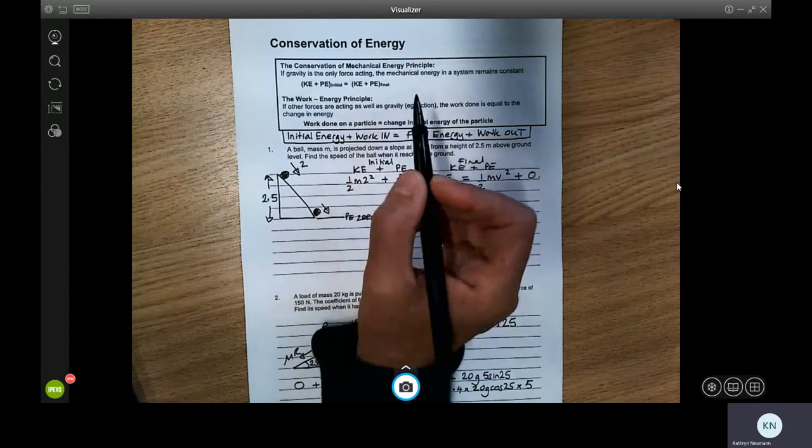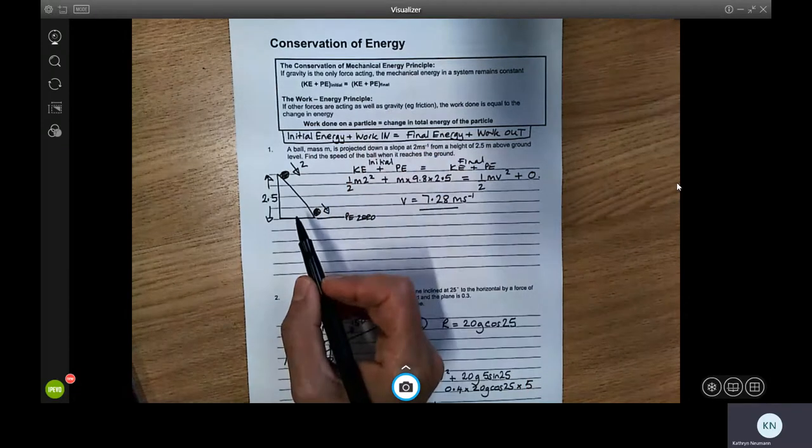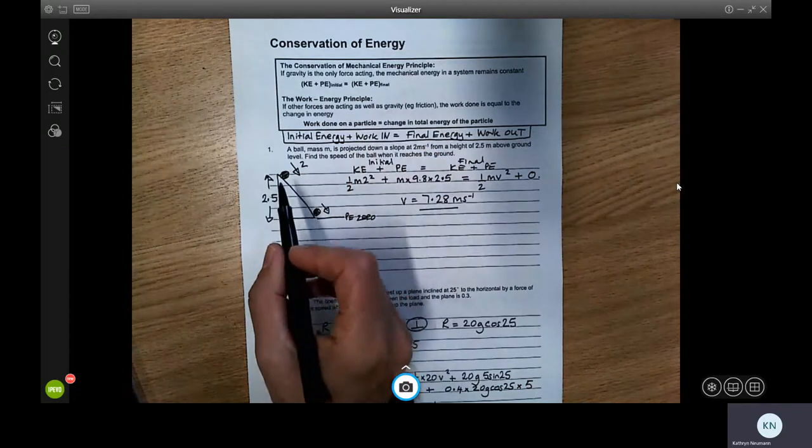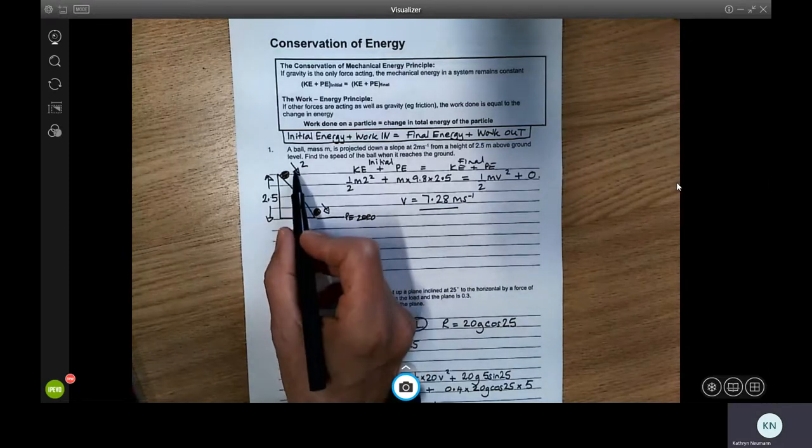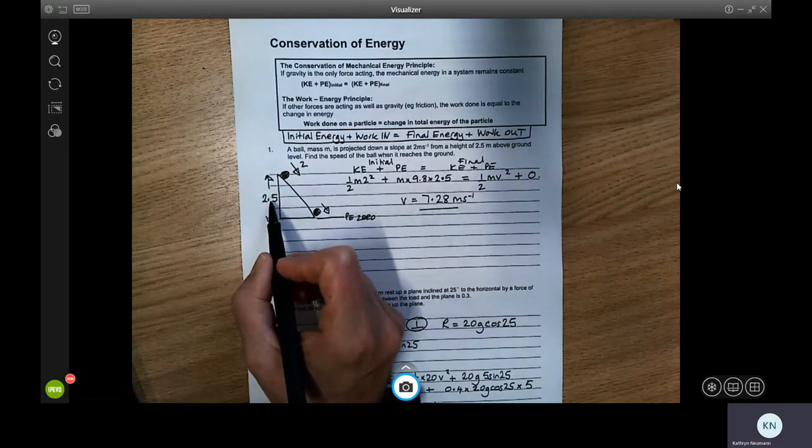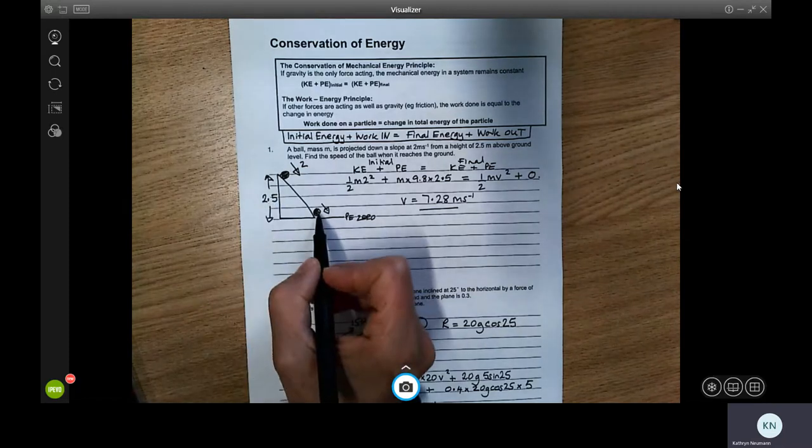So let's see how that works in question one here. We've got a ball mass m projected down a slope at two meters per second from a height of 2.5 meters above ground level. Find the speed of the ball when it reaches the ground.